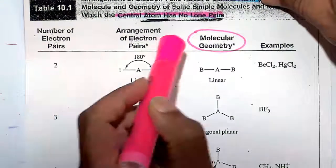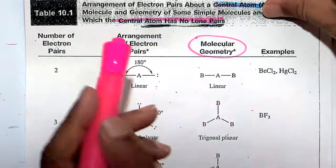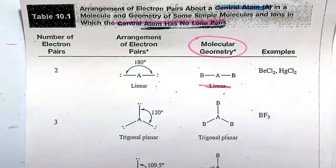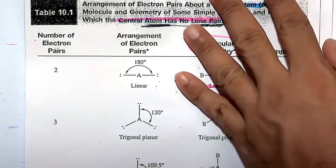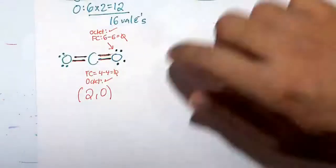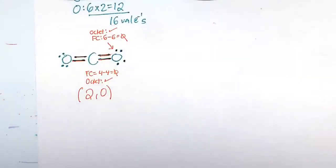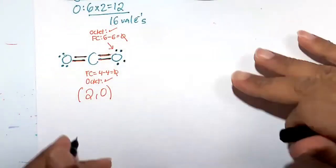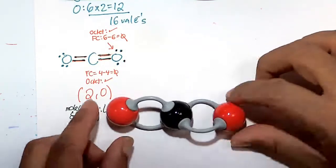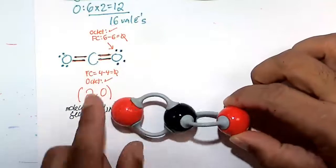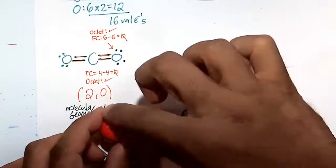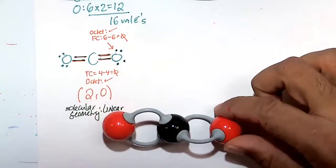So two bonds, no lone pairs, two bonds, zero lone pairs, that will be a linear molecule. So CO2 is an example of a linear molecule. Two bonds, zero lone pairs. So that's linear. That would be the molecular geometry. And the three-dimensional structure would be sort of like this. It's just a straight line. Carbon, oxygen. Here's our double bond. Here's our double bond. Linear molecule. Perfect bond angle of 180 degrees.